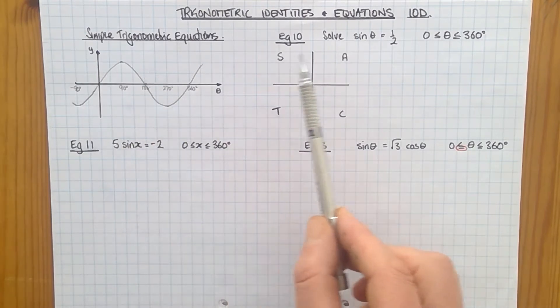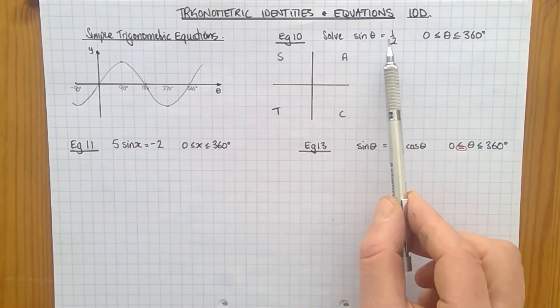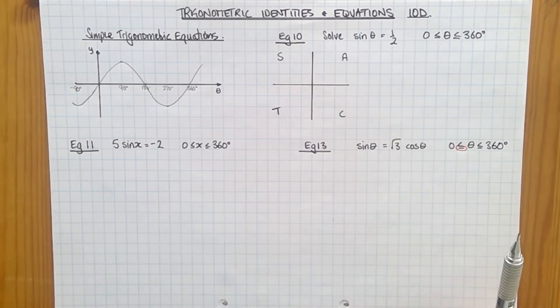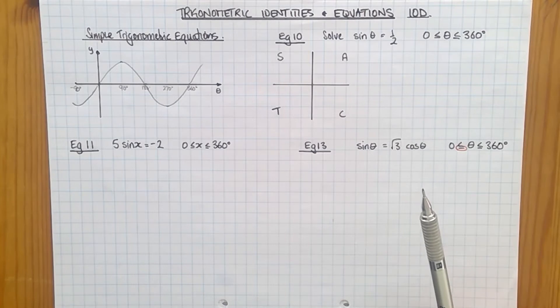So all we've got is a simple equation. So in this case, solve sine theta equals a half. You might think that's a piece of cake. I'll just press shift sine half on my calculator and it'll tell me what the angle is. Maybe you might know what the inverse of sine theta is.